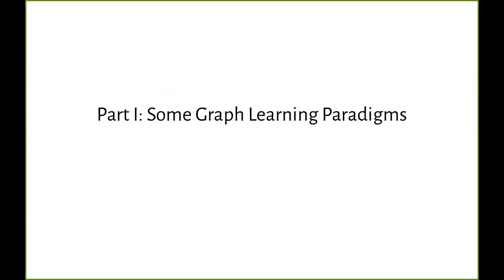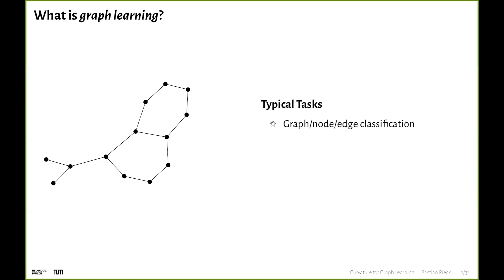We're going to start with some brief graph learning paradigms in machine learning, just to get us all on the same page. Graph learning refers to taking a graph and learning some tasks on it. These tasks could be classification of the graph itself, of nodes, of edges, and so on. For instance, the graph could be a molecule you want to synthesize, and you want to classify whether it's toxic. You can also do regression tasks — predicting continuous properties such as how easily a molecule dissolves in water — at the graph, node, or edge level.